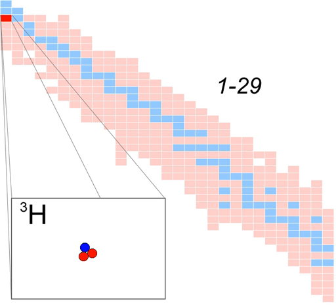High-energy neutrons irradiating boron-10 will also occasionally produce tritium. A more common result of boron-10 neutron capture is lithium-7 and a single alpha particle.